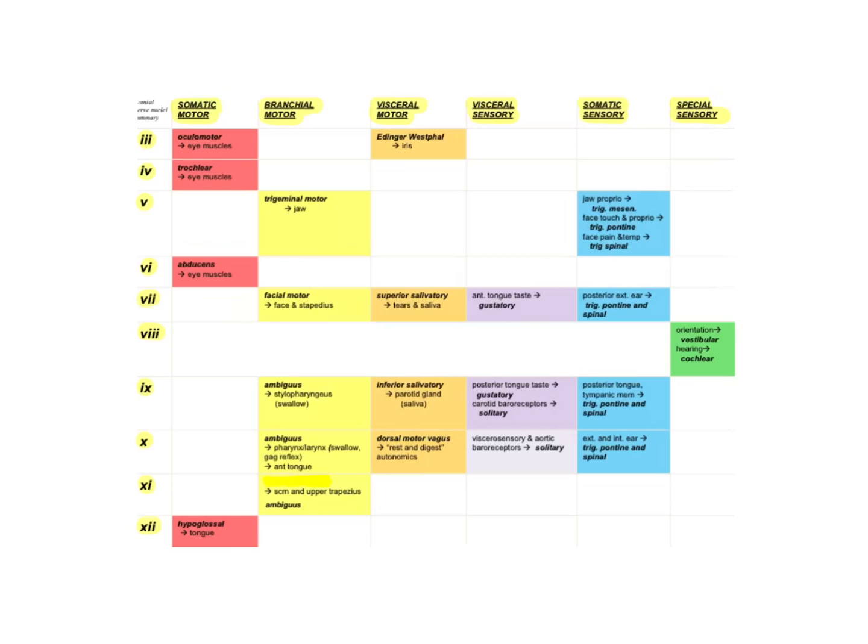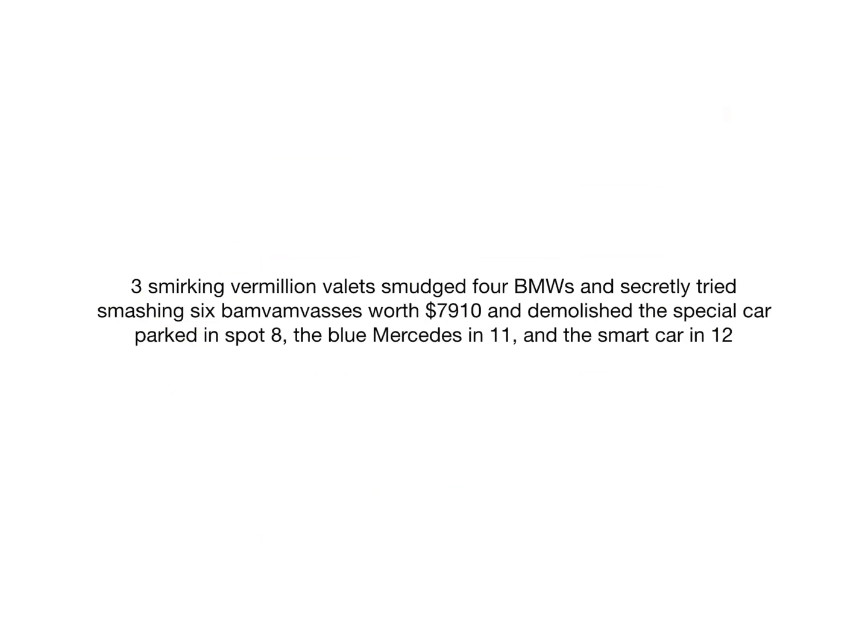To help you remember the cranial nerve nuclei and the modality of each one, I'm going to give you a story. Imagine yourself as a bystander at a hotel parking valet area. You see three valets wearing their red or vermilion vests — they look a little shady, smirking with a bad intention in mind. They're supposed to be parking other people's cars, but instead they intend to damage some cars.